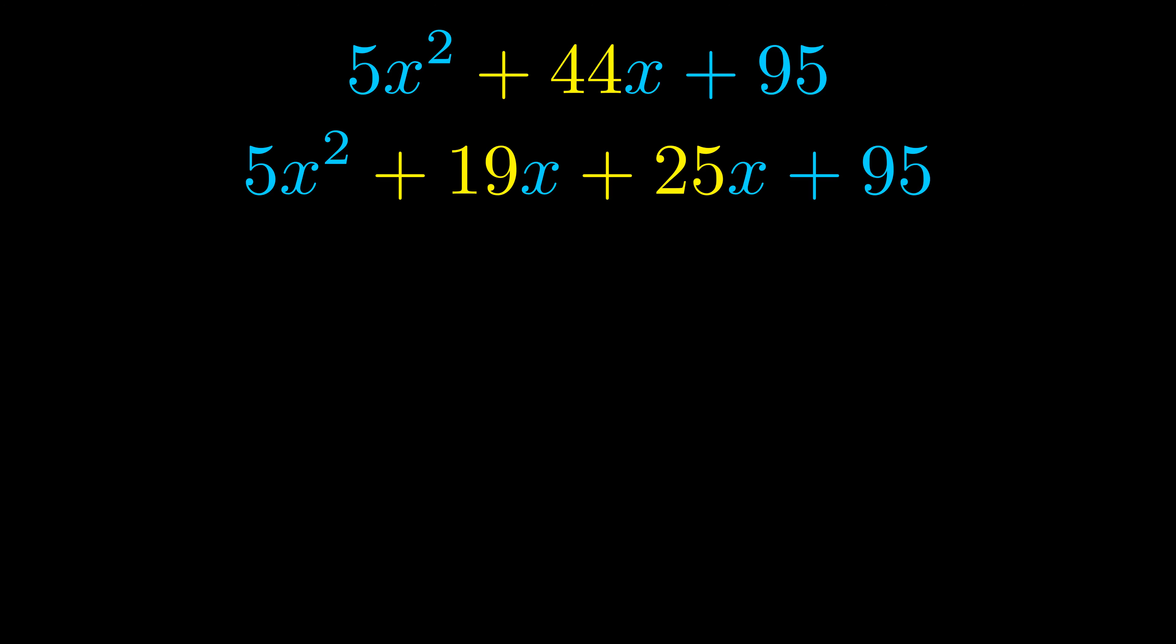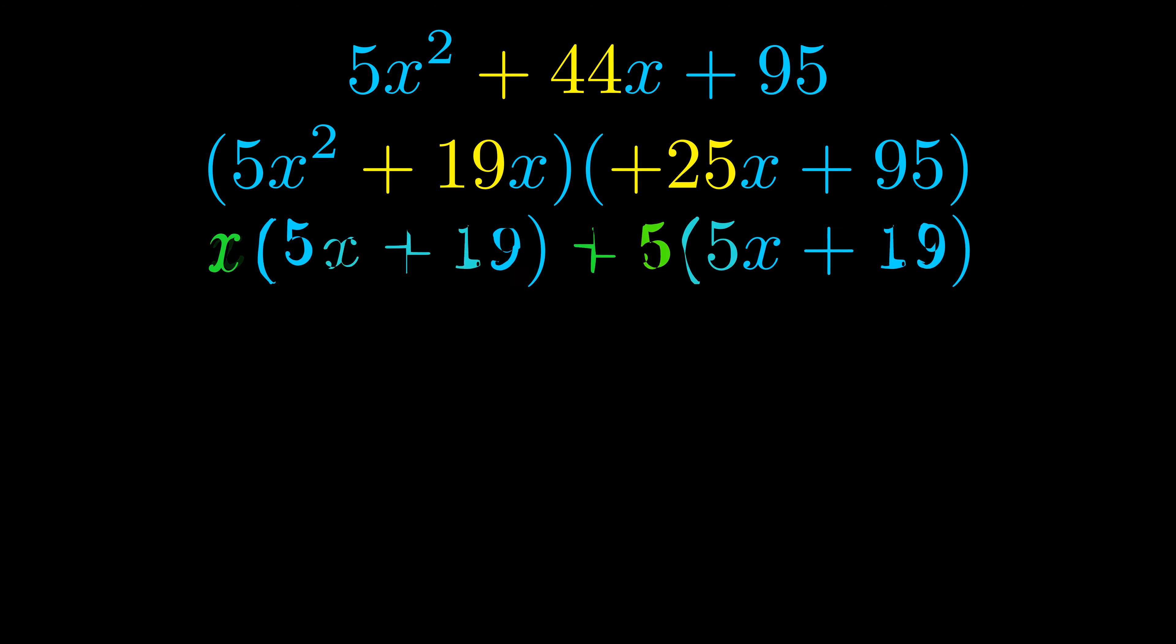Once we've done this we go ahead and we put parentheses around the first term and the last term. And we do that so that we can take the greatest common factor out of both terms. We can see the greatest common factor is now outside in green. Notice also how what remains inside of the parentheses is the same in both cases. The blue values are the same.